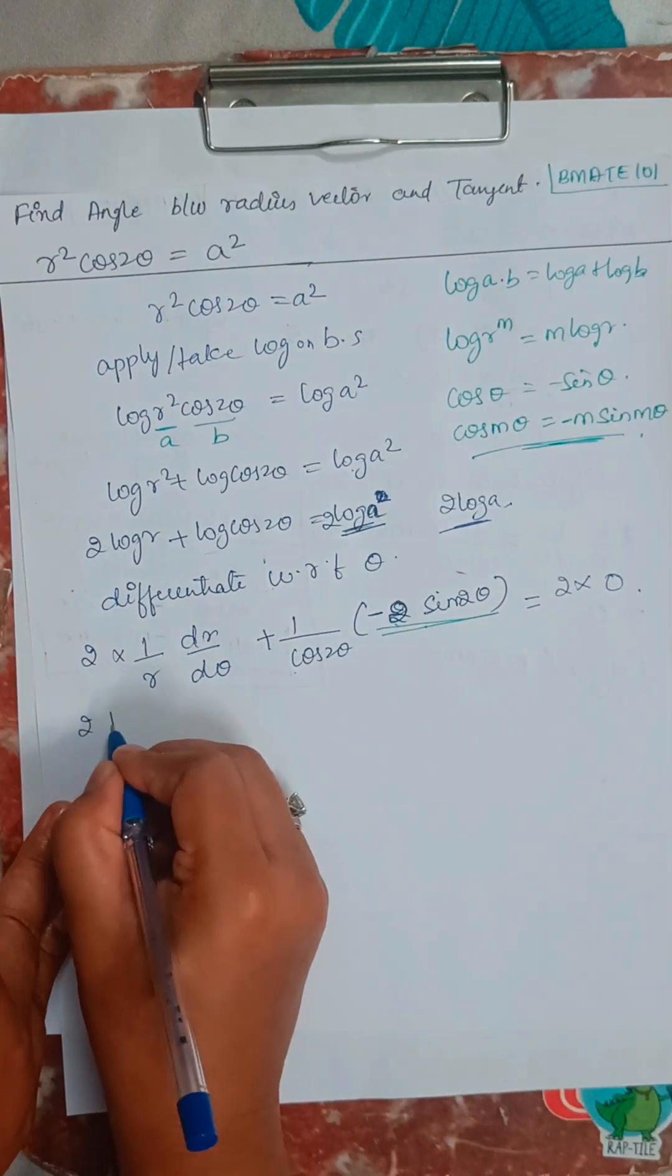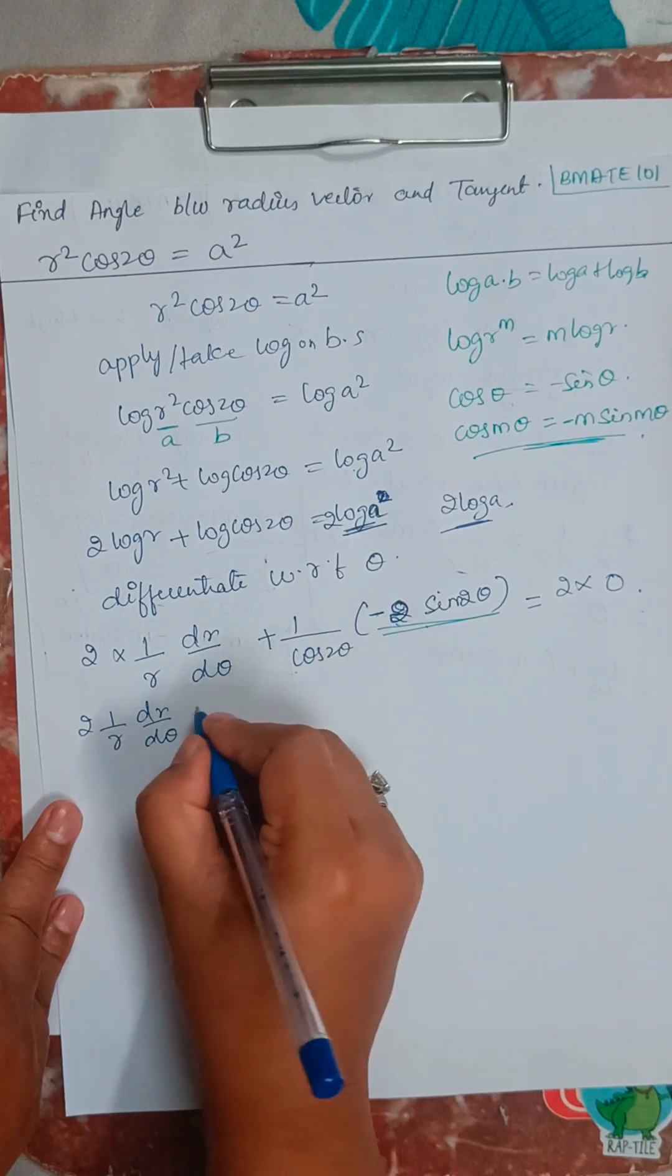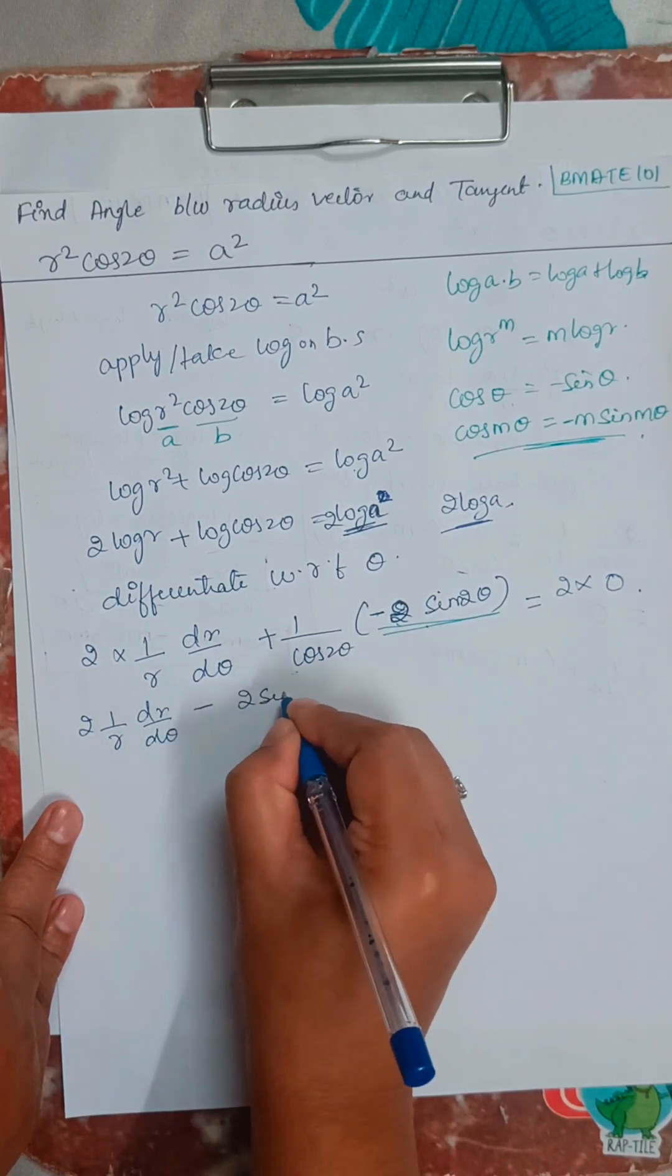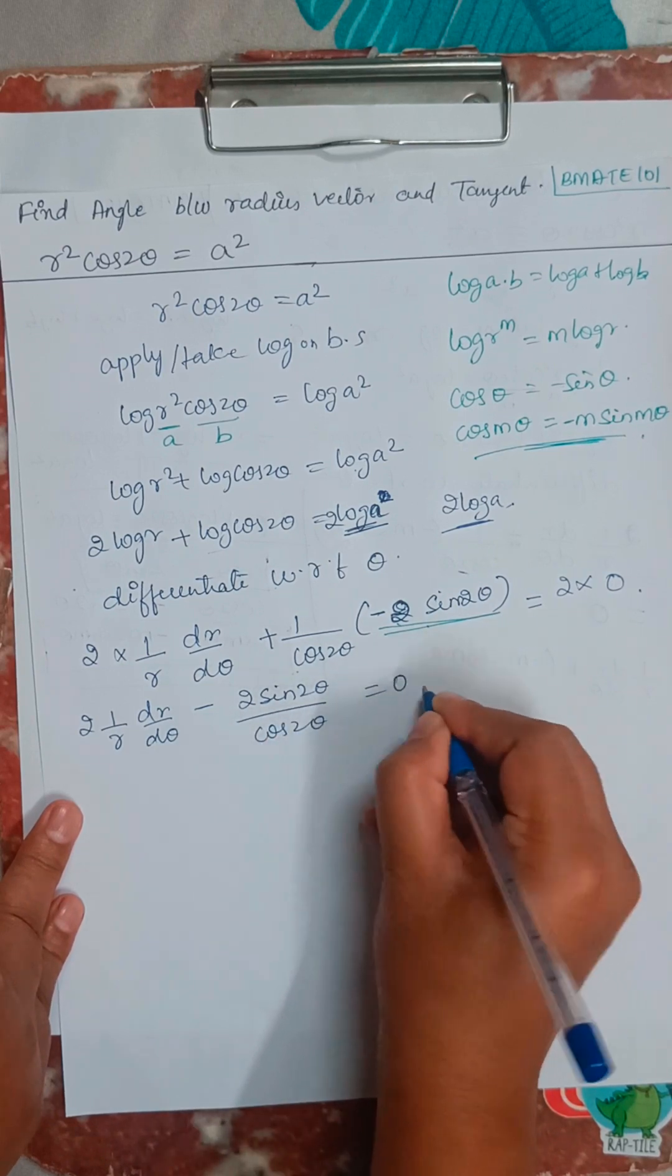So here 2 times 1 by r, dr by d theta. Now this minus I will take, 2 sin 2 theta divided by cos 2 theta equals 0.